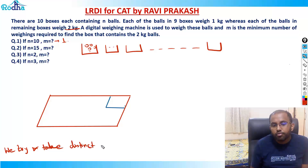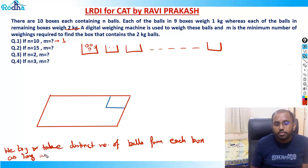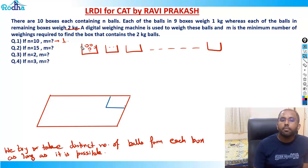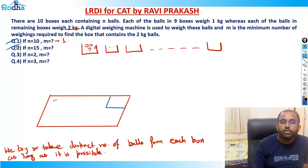We try and take a distinct number of balls. For example, if we have 10 balls in each box, from the first box I can pick one, from the second I can pick two, from the third I can pick three, like that from the 10th I can pick 10. That's how I got the answer as 1 for the first question.